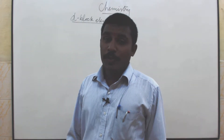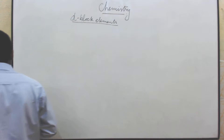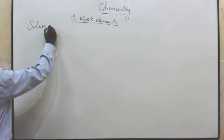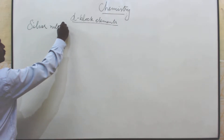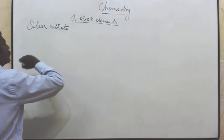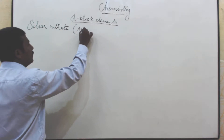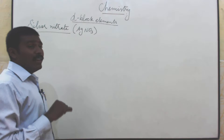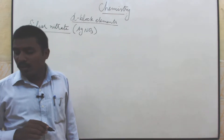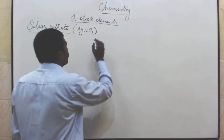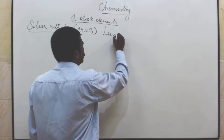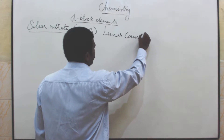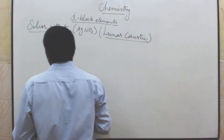The next important topic is how to prepare silver nitrate. The formula for silver nitrate is AgNO3. Another name for silver nitrate is lunar caustic — silver nitrate is also known as lunar caustic.